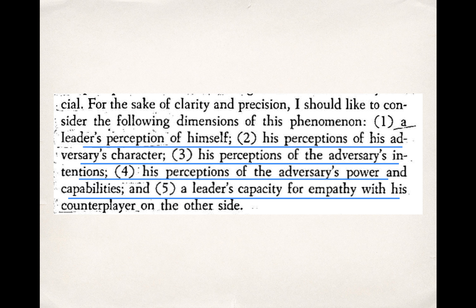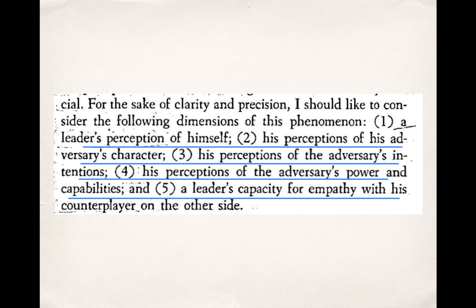Overall, Stossinger argues that the personality of individual leaders is really key to understanding why World War I happened. From this, we might extrapolate that some leaders are more dangerous than others — those with an insecure self-perception, a negative assessment of their adversary's character, paranoia about the adversary's intentions, concerns about rising and falling power, and an inability to empathize with the counter-player on the other side. These systems of perception and empathy are abstract, but Stossinger applies them succinctly to give a real sense of what Tsar Nicholas or Wilhelm II were like in the run-up to this conflict.